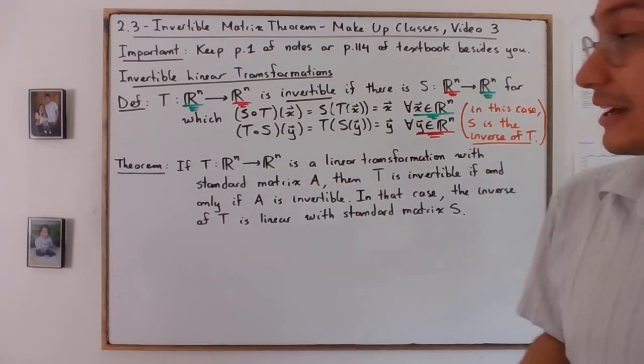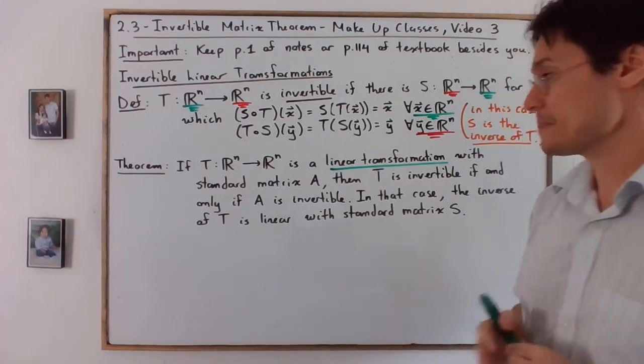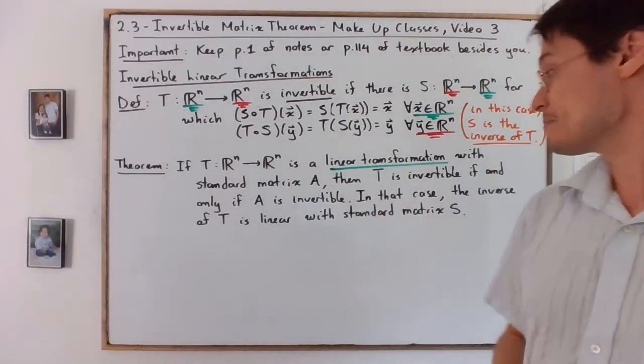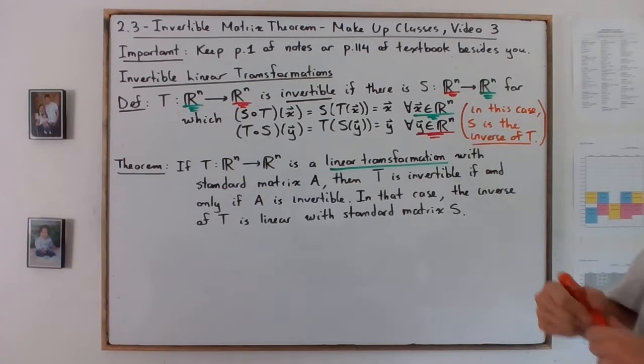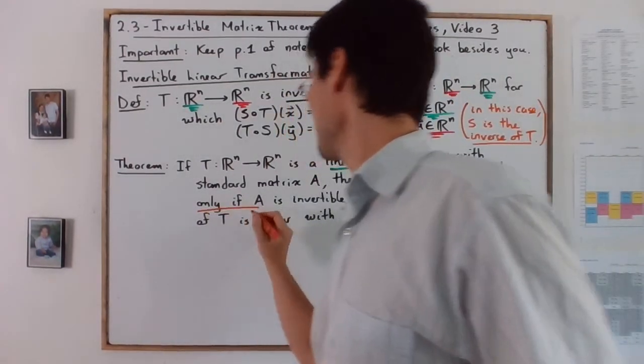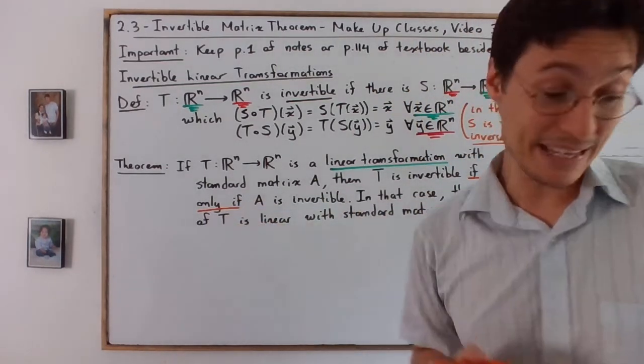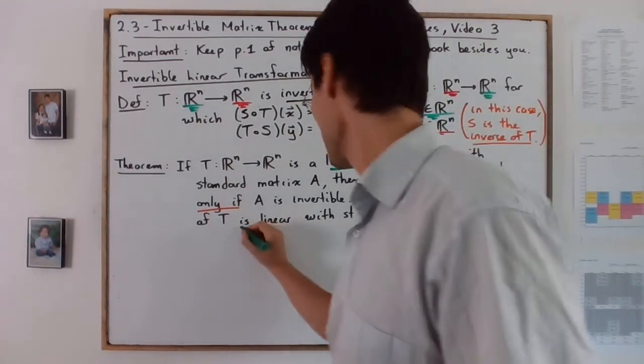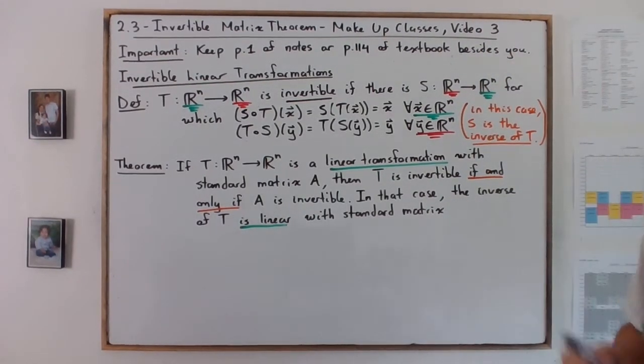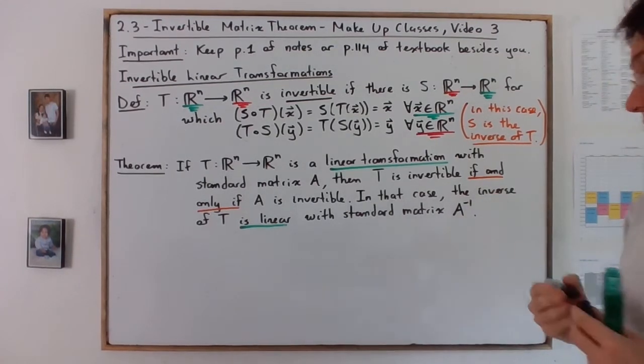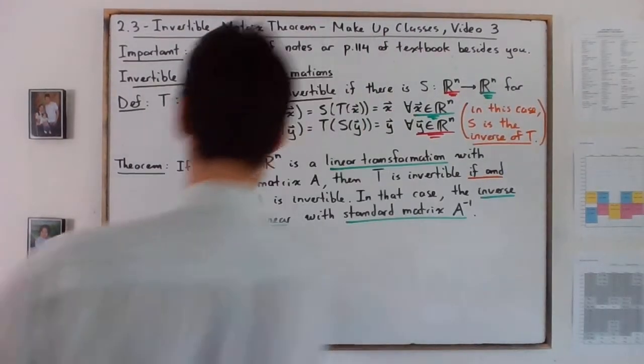And the theorem: let's underline a couple of important words. If you have a transformation that is linear and its standard matrix is A, then T is invertible if and only if A is invertible as well. In that case, the inverse of T is linear and the standard matrix is not S but A inverse. The standard matrix of the inverse will be A inverse.